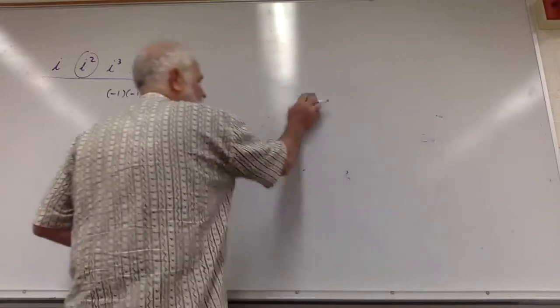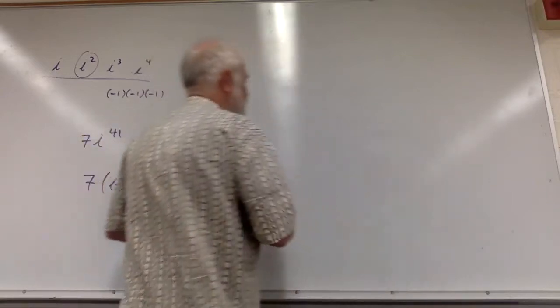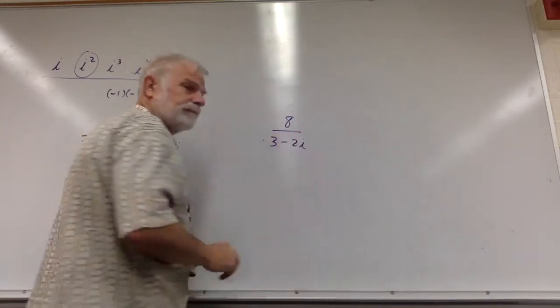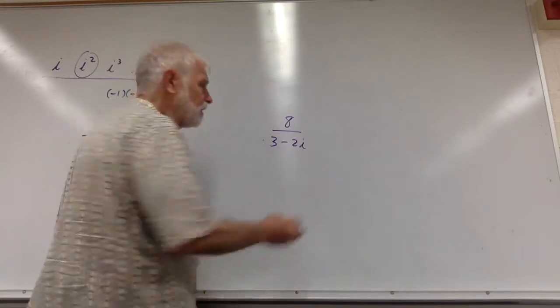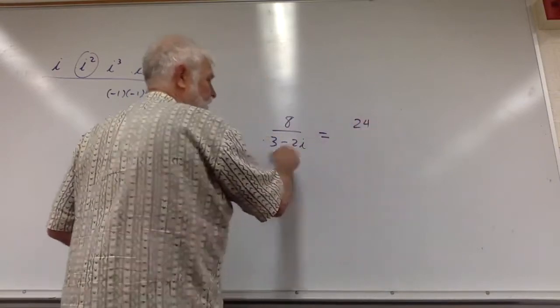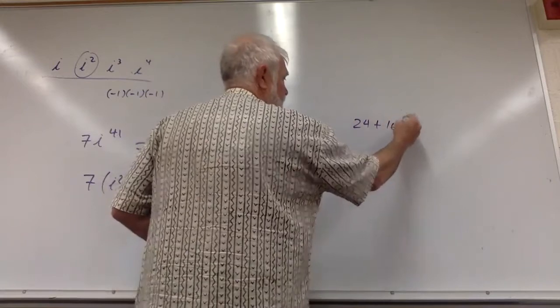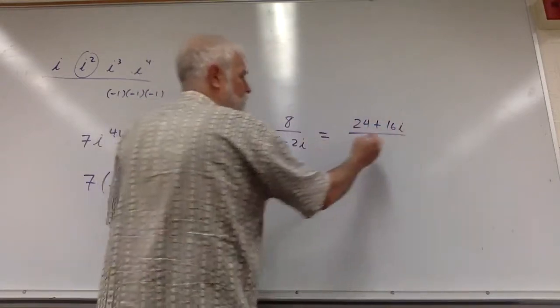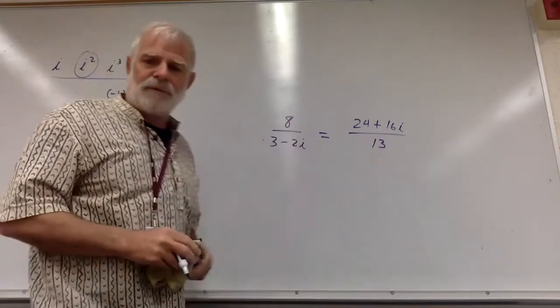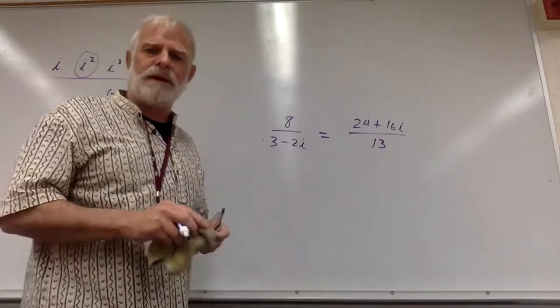So you try one. I'll change the numbers. You pause the video. See if you can pick up a little shortcut: 8 over 3 - 2i. Unpause the video. Your answer is 8 × 3, 24, change the sign, so that's 16i. Square the two numbers: 9 and 4 is 13.